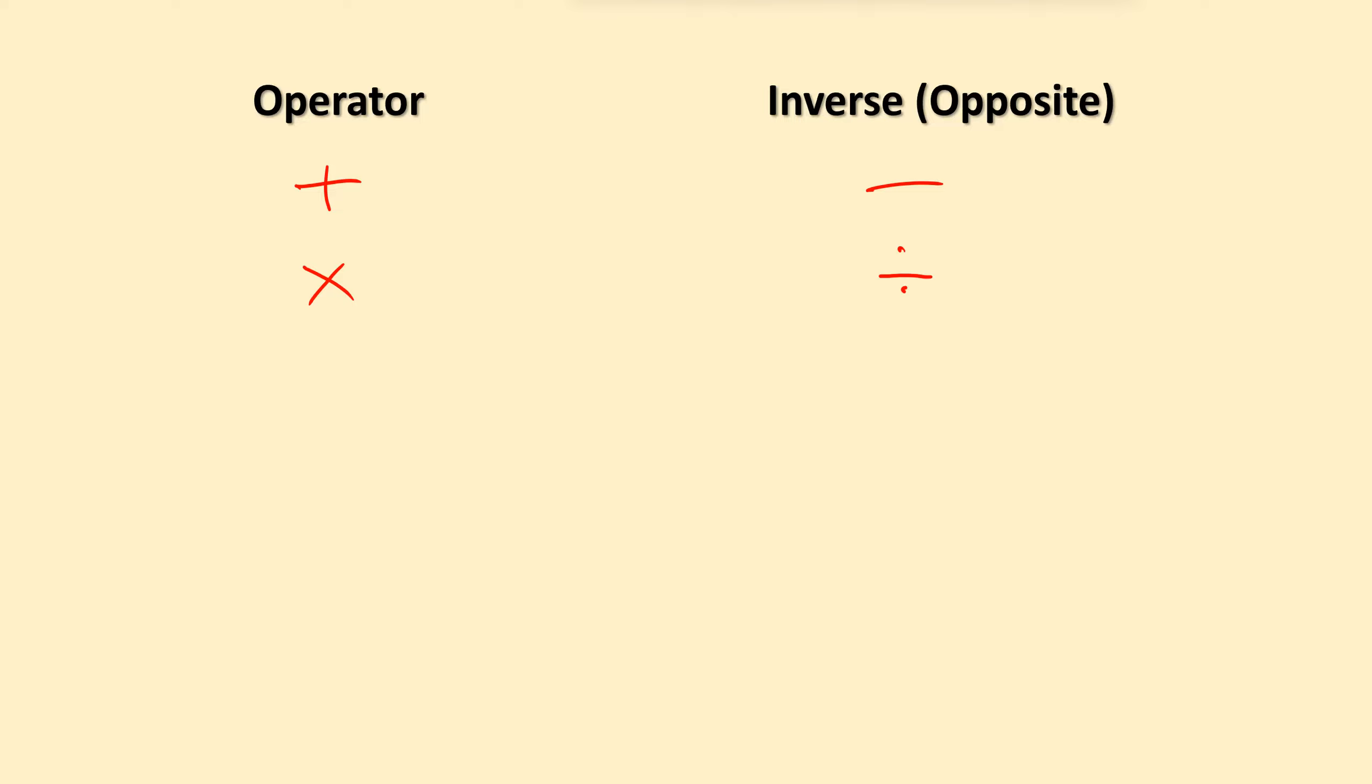It works for essentially anything. If we had, say, something squared, or the inverse, the opposite, how do you undo squared? Well, you take the square root of it.